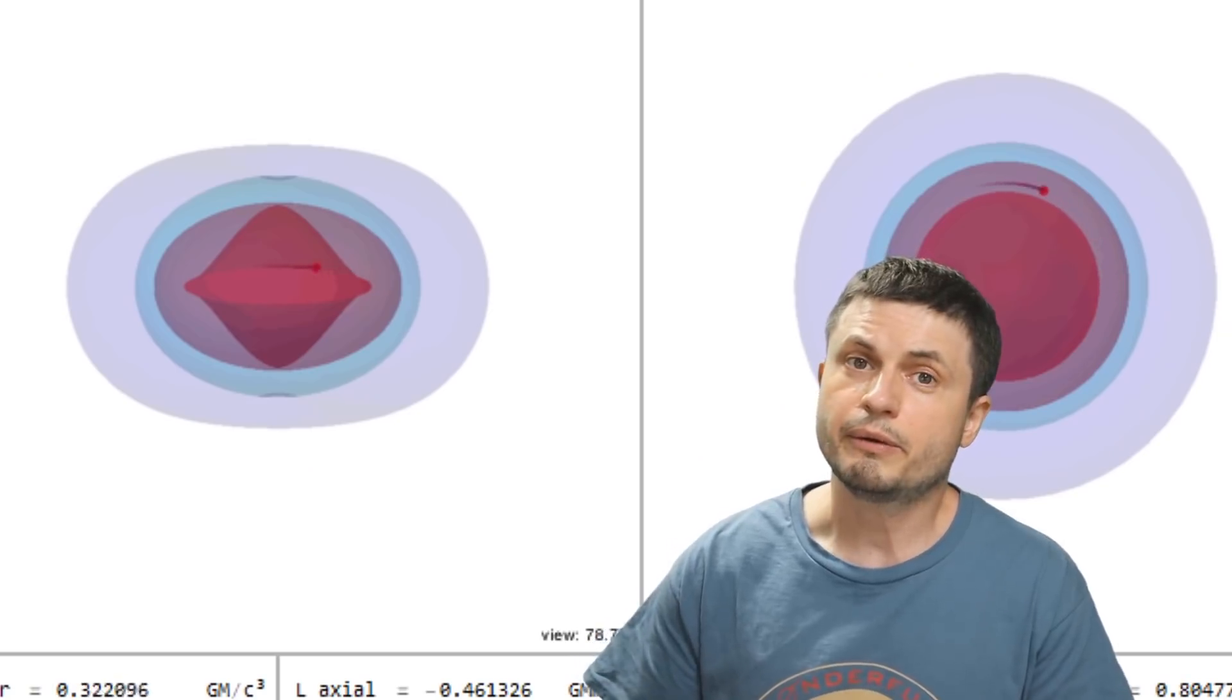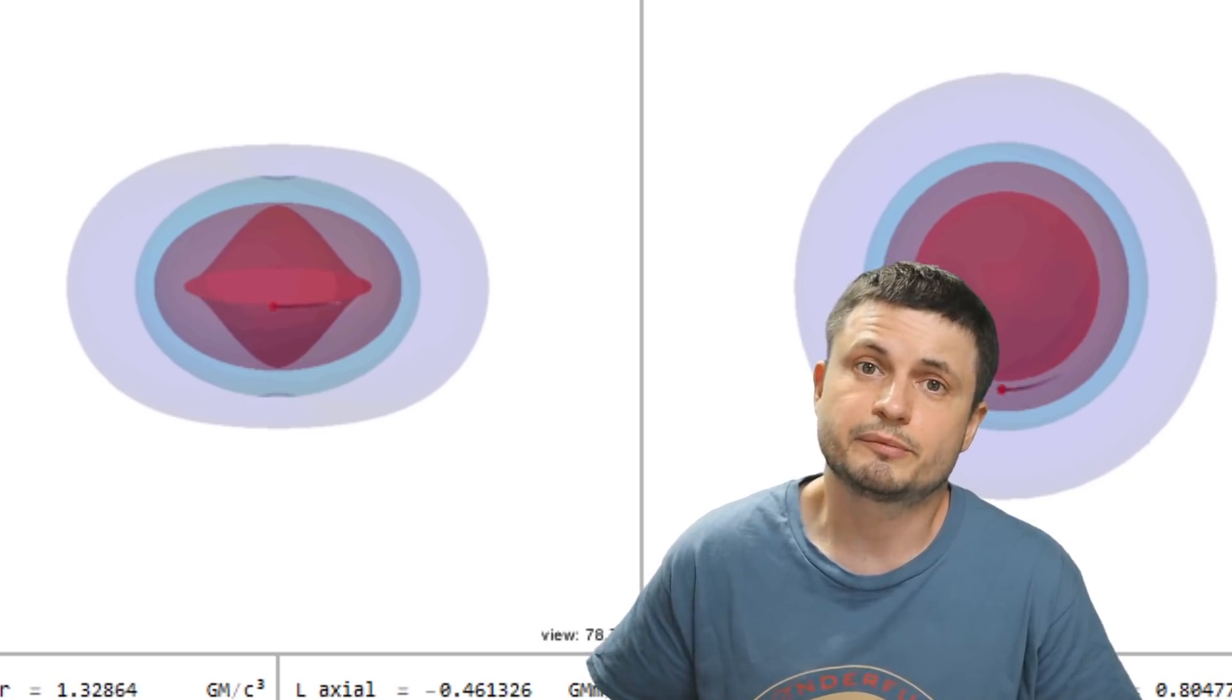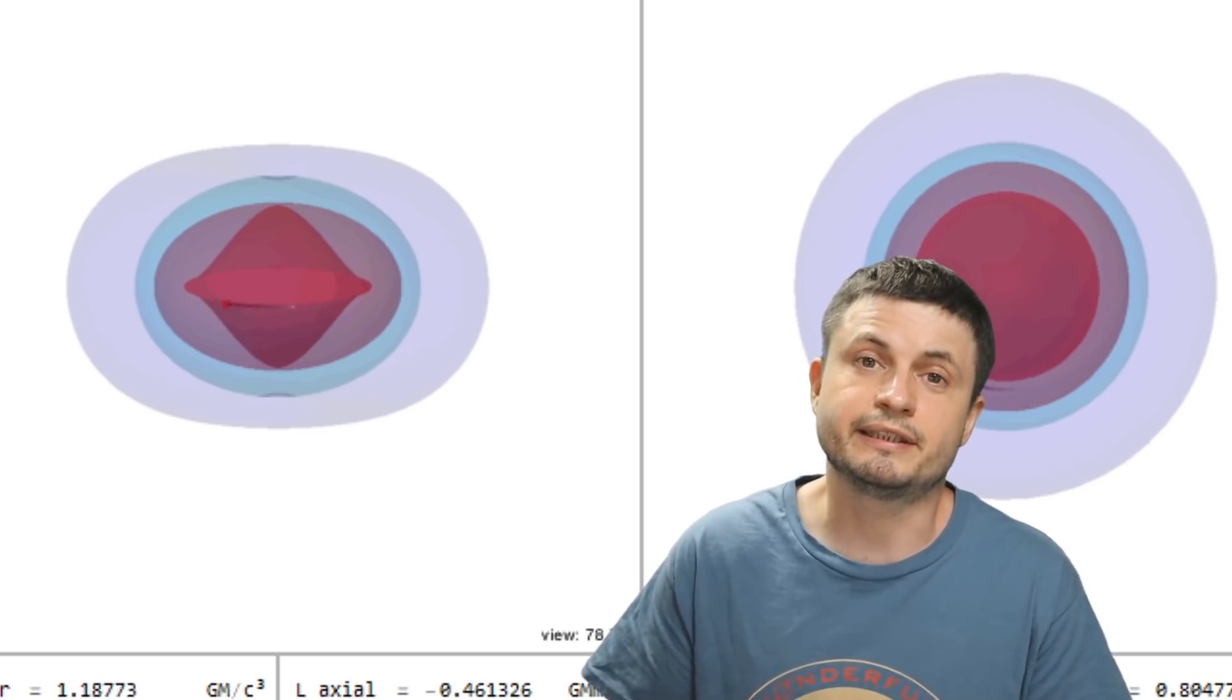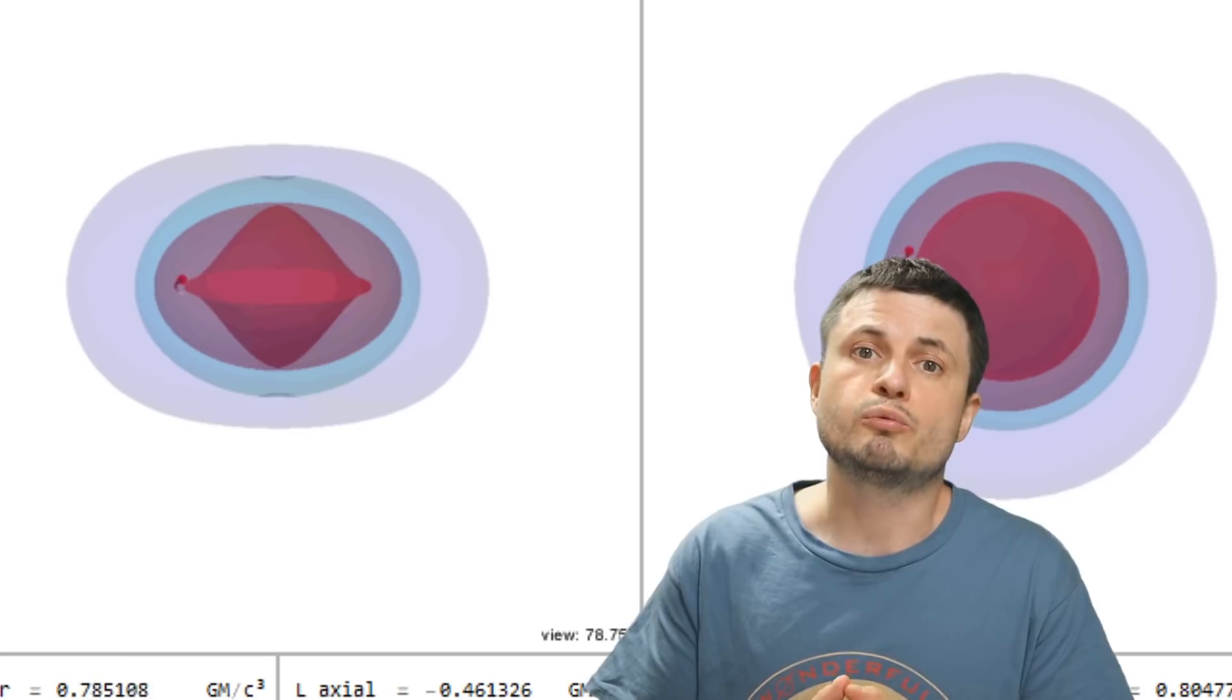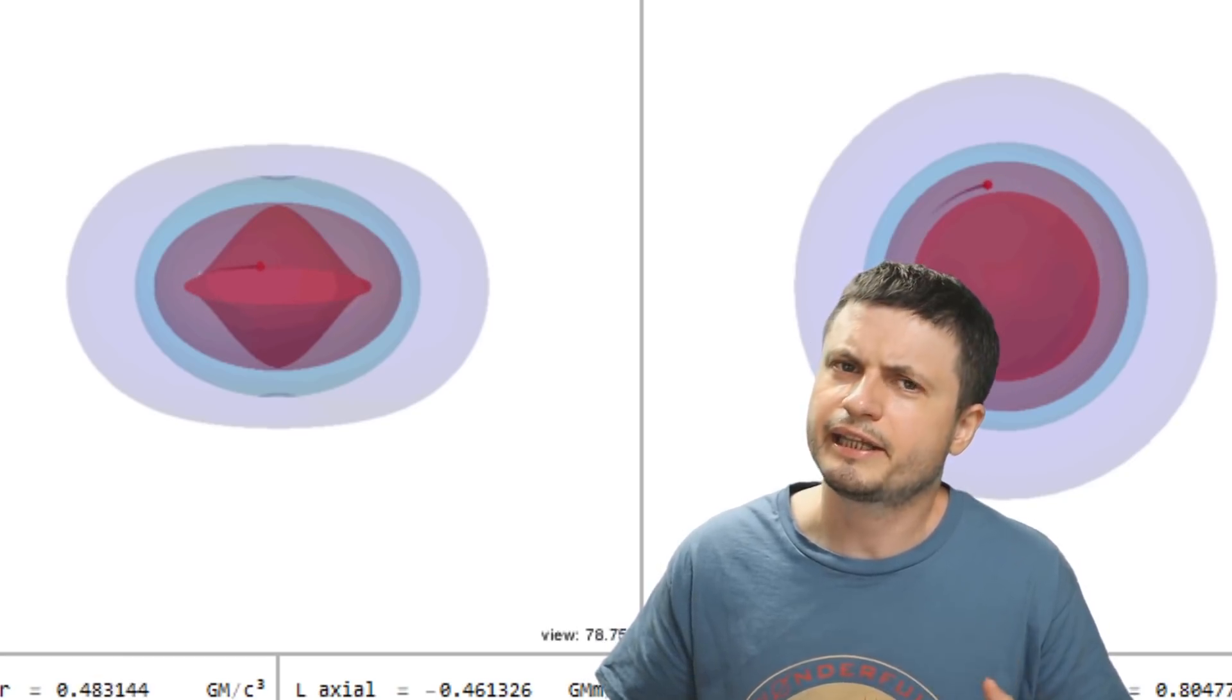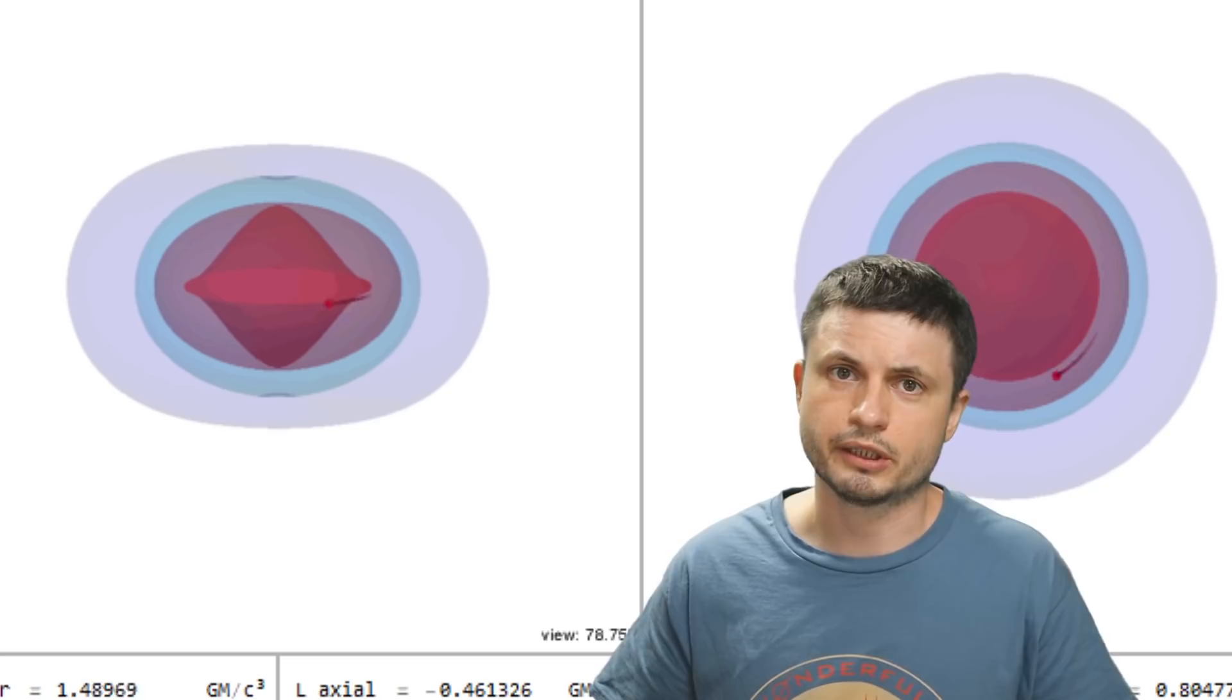Well, first of all, the theory behind Penrose process is pretty solid. Mathematically, at least, it definitely makes sense. But it only works for black holes that are spinning, which hypothetically would probably be most of the black holes out there.